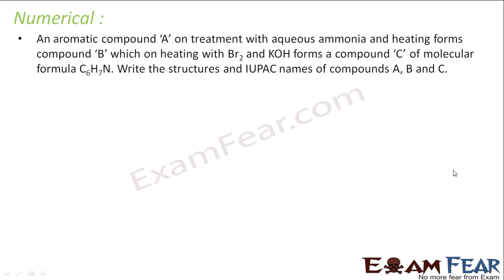The question says aromatic compound A on treatment with aqueous ammonia and heating forms B, which on reacting with Br2 and KOH gives C. Since it's reacting with Br2 and KOH, that means this is a Hoffmann degradation reaction. That means it has to be of RCONH2 form. And since C is the output of degradation, C will be in the form RNH2. It's aromatic, so B is my amide and C is my amine.